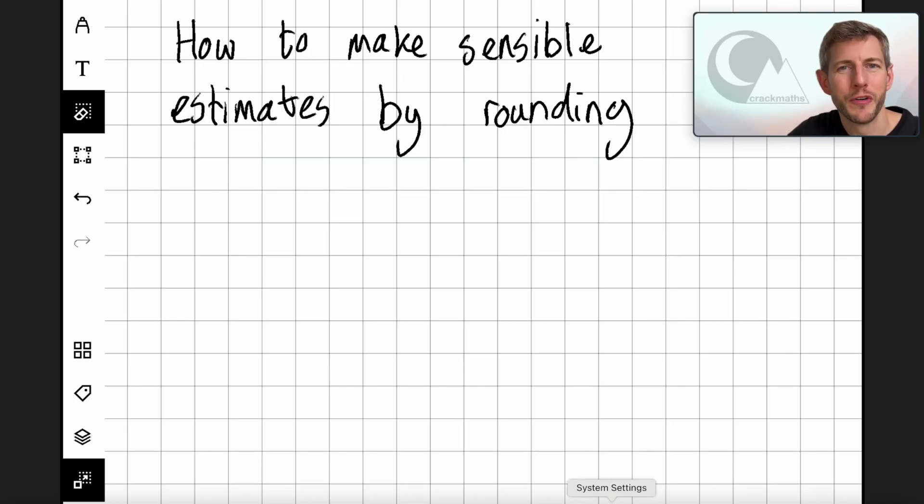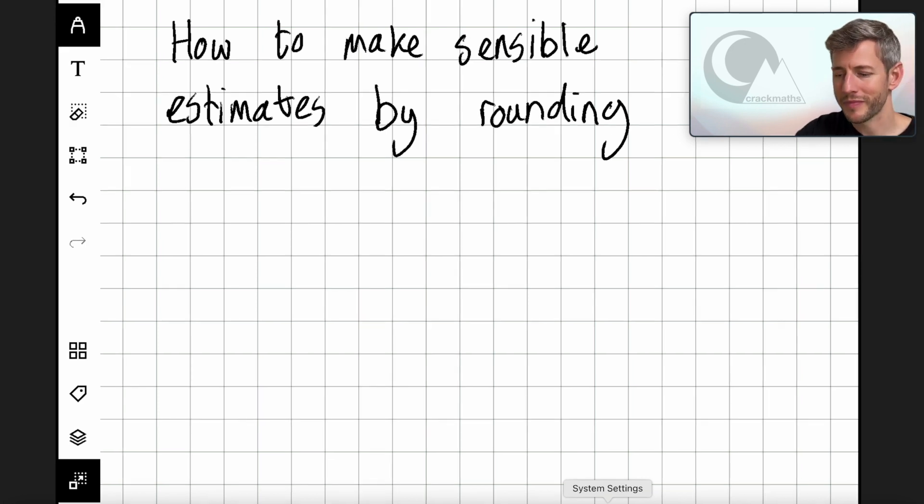Hi, and welcome to this tutorial on how to make sensible estimates by rounding. Imagine you had the sum of 42.7 plus 38.5, and you were asked on the spot what you think the answer was. The purpose of estimating and rounding is to allow us to come up with an answer that is going to be close to this, but not exactly the right number, but it's going to let us know what it's roughly going to be.